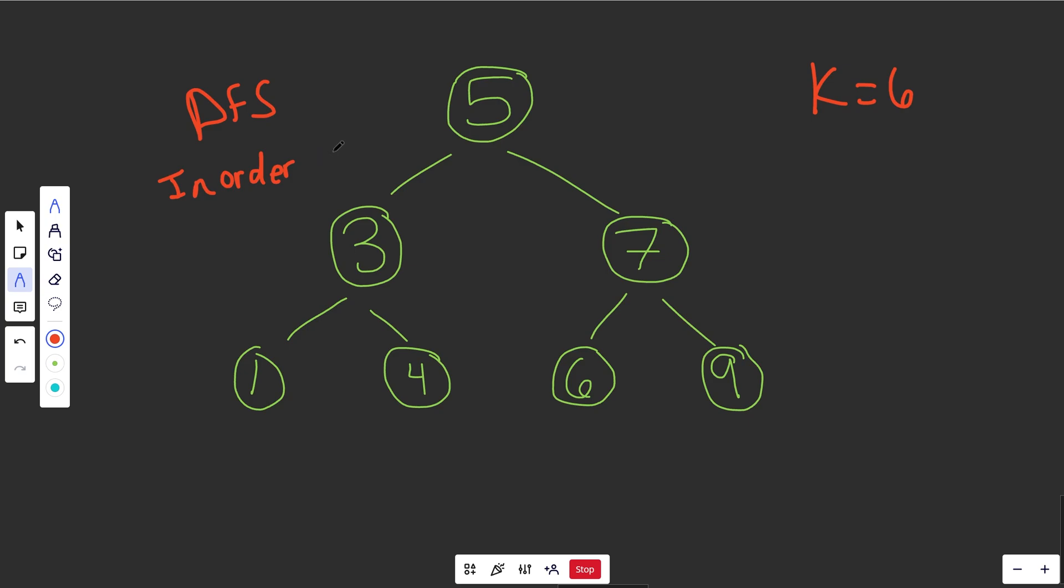So what is an in-order traversal? Well, it basically means that for any node here, you would consider the left subtree before yourself, and then you'd process yourself, the current node, and then you would do what's on the right subtree. If we looked at this 5 here, well, first he's got to do his left, so he's going to go over here. Okay, the same rule applies. This 3 has got to do its left first, so he's going to go over here.